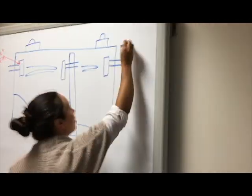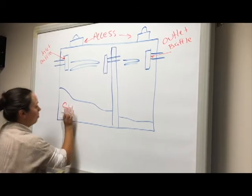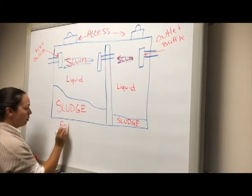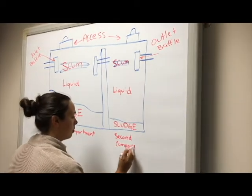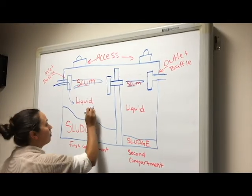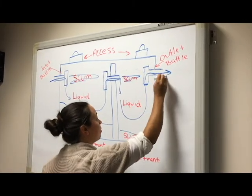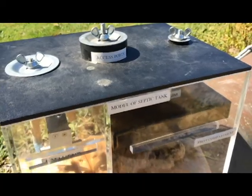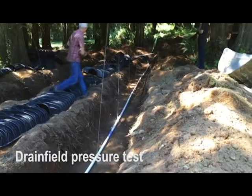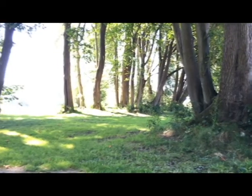In the first compartment, solids settle down to the bottom and are called sludge, and the soap suds and floaty stuff like oils, fats, and grease come to the top and are called scum. In the middle we have clear water. That water moves through a baffle into the second compartment, where it has a bit more time to settle out any remaining solids and filter out any scum. Then the clear liquid moves out through the outlet baffle and out to your drain field.